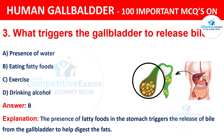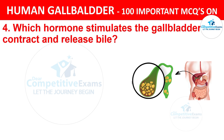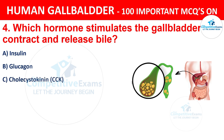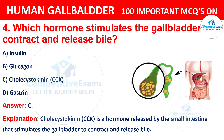Question 4: Which hormone stimulates the gallbladder to contract and release the bile? Your options are: A) Insulin, B) Glucagon, C) Cholecystokinin, D) Gastrin. The correct answer is C, i.e. Cholecystokinin. CCK is a hormone released by the small intestine that stimulates the gallbladder to contract and release bile.